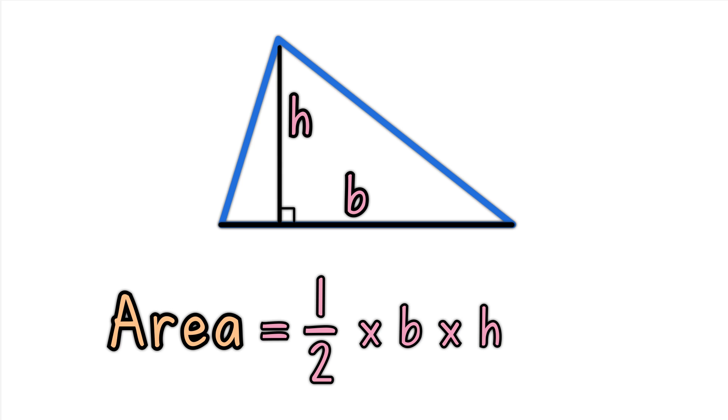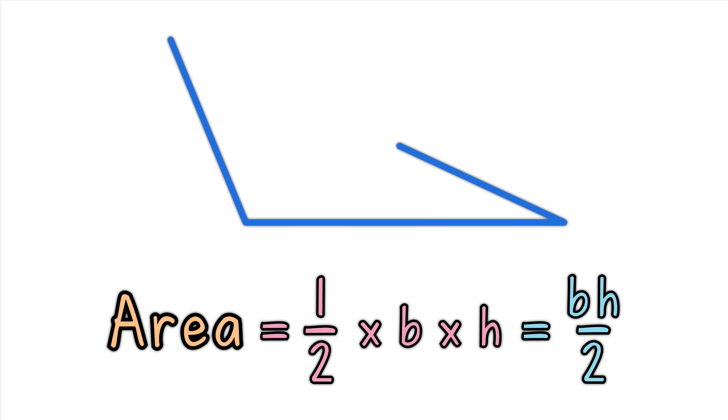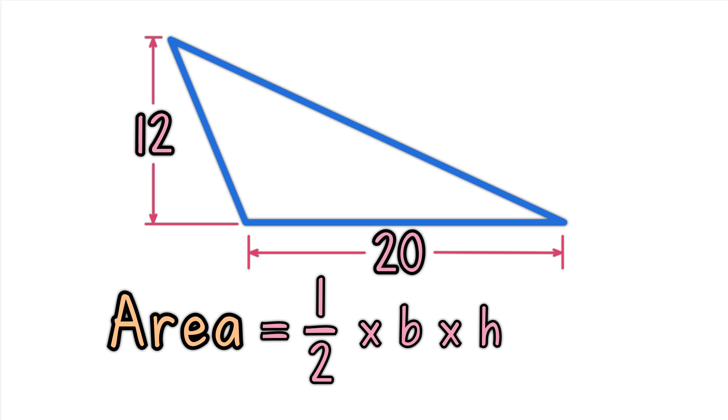Another way of writing the formula is BH over 2. Example: What is the area of this triangle? Note that 12 is the height, not the length of the left hand side.